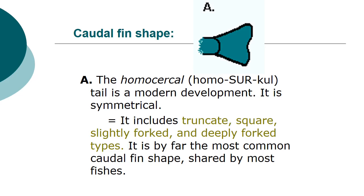Caudal fin shape: the homocercal tail is a modern development — it is symmetrical. It includes truncate, square, slightly forked, and deeply forked shapes. It is by far the most common caudal fin shape, shared by most fishes.